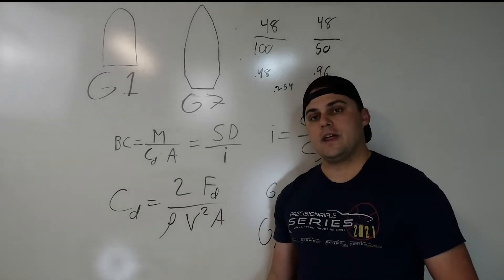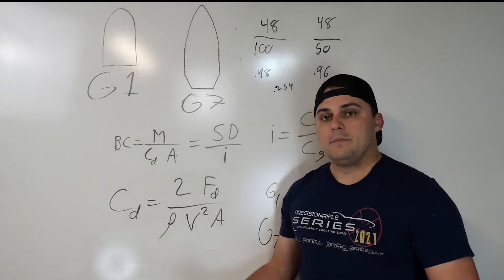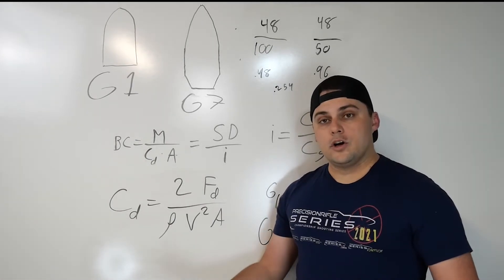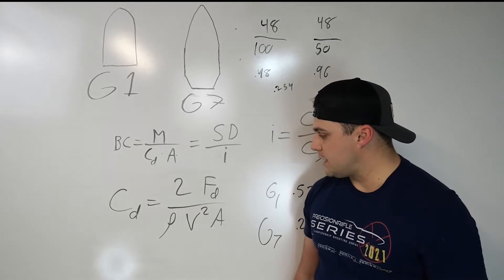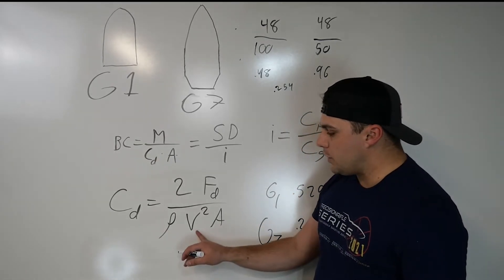So in one of the other videos, I did mention that ballistic coefficient is constantly changing. That's because the drag coefficient is constantly changing, because it's a function of the air density and a function of the velocity.